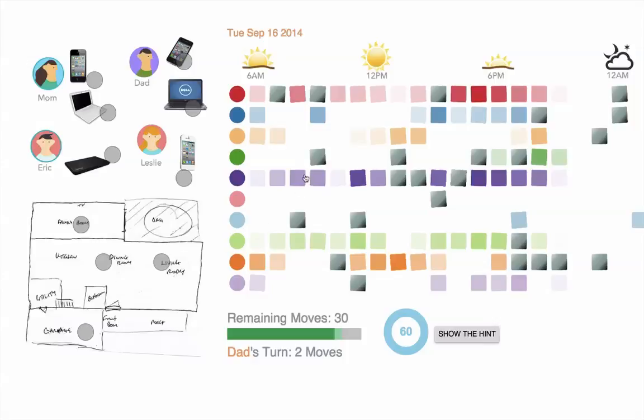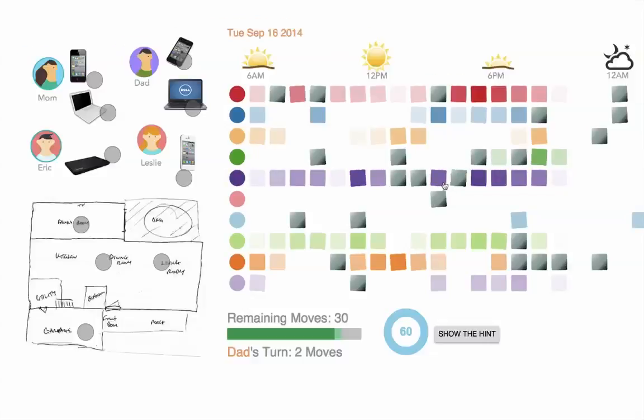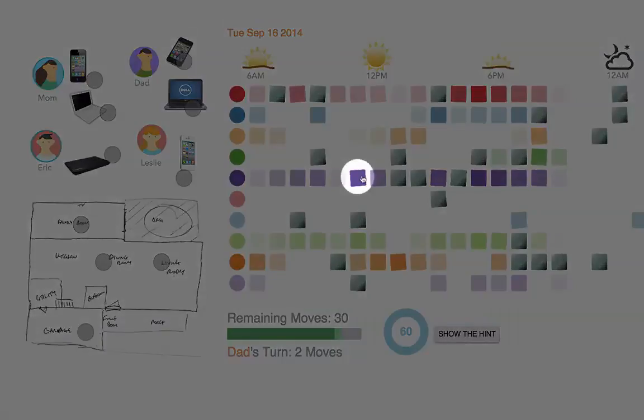Each square in this grid shows the activity level of a particular hour. A more active hour is represented by a darker shade of the color. For example, if Leslie's iPhone generated those purple activities, then Leslie used it much more between 11 and 12 p.m. than 10 and 11 a.m.